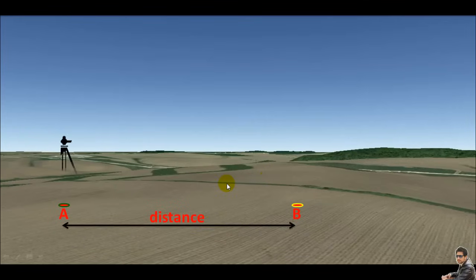To find the distance, we just set the instrument at one of these points and the graduated staff at another point.